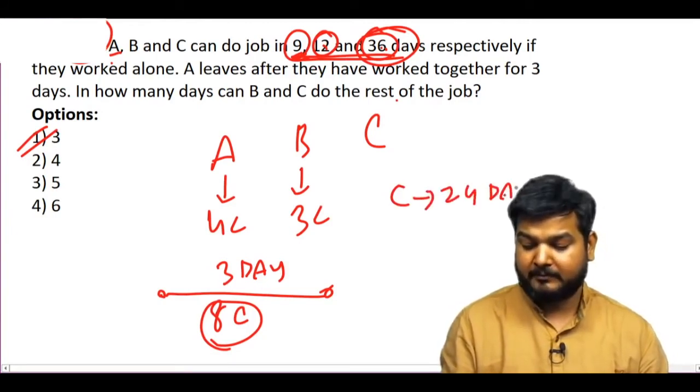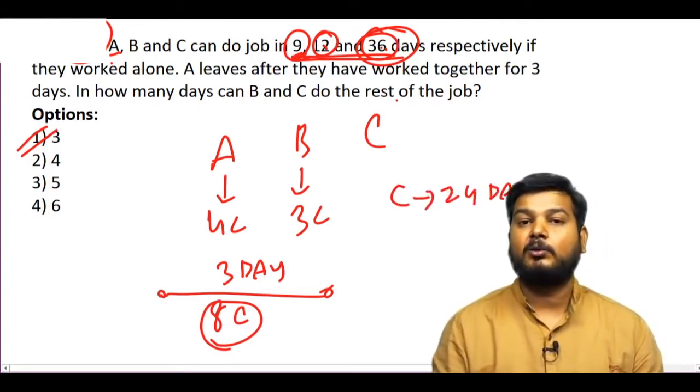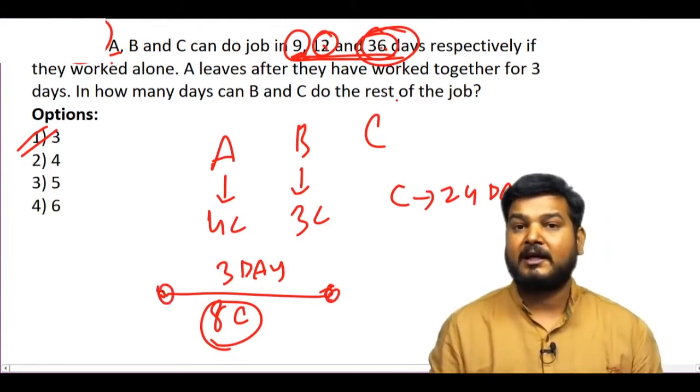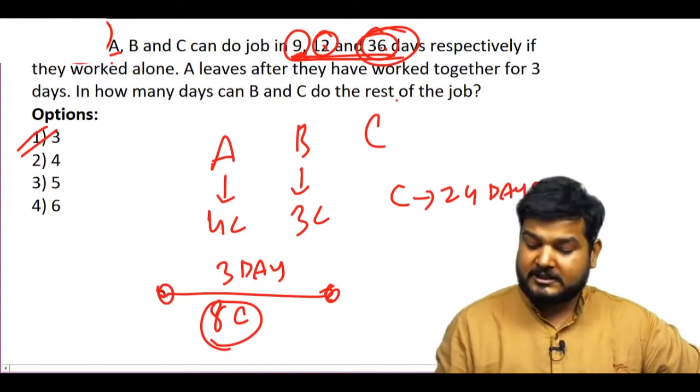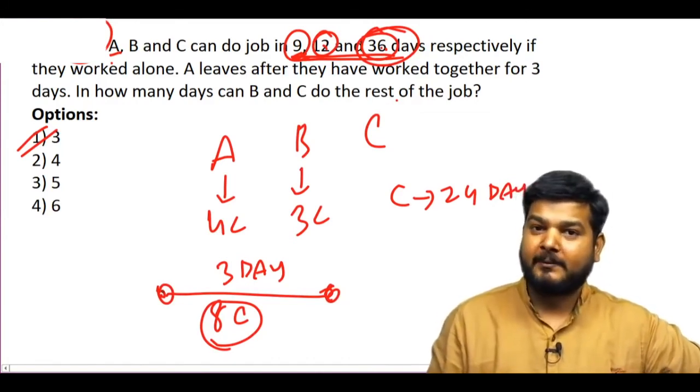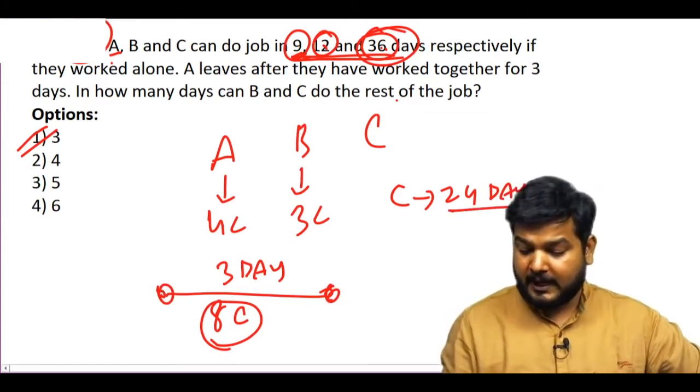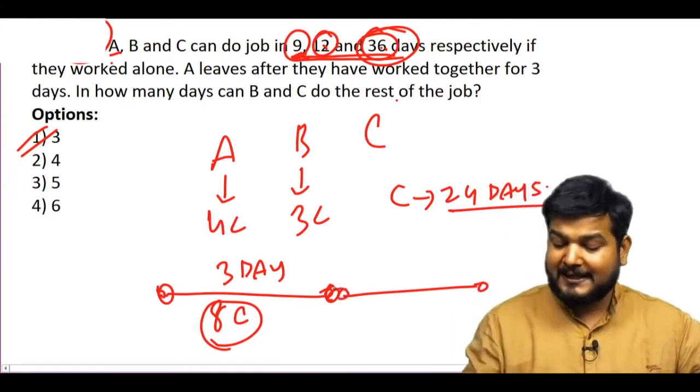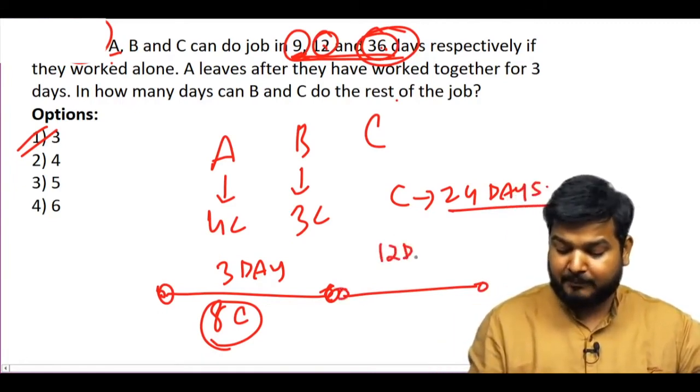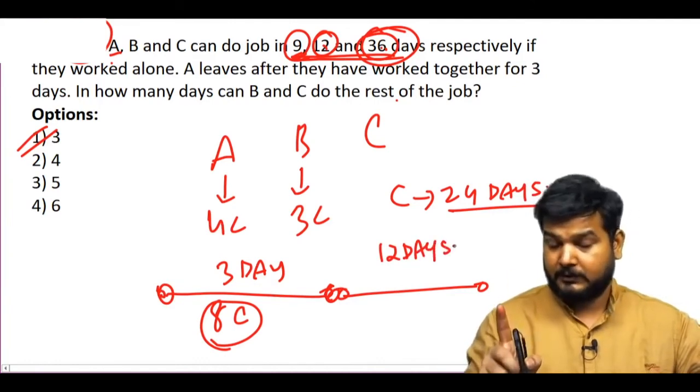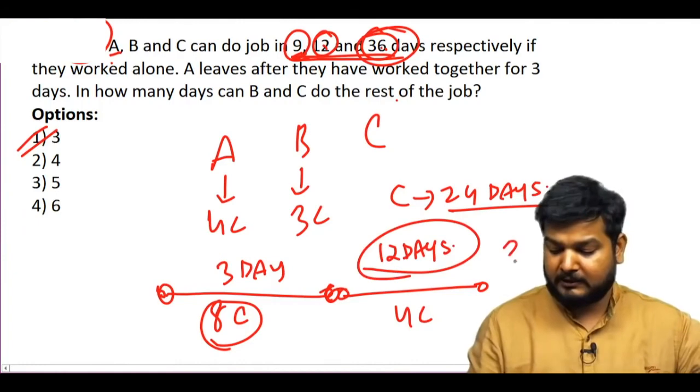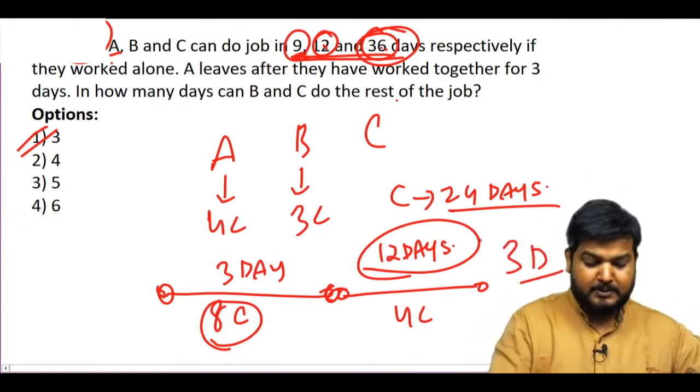How many times does C work? 36 days. If we compare the other combination and compare the C work, then the rest of the C work is 12 days. But who does the C work? 4C. How many times does C work? 3 days. This is also an alternative thinking.